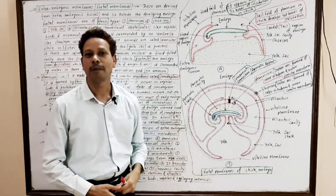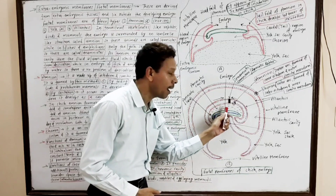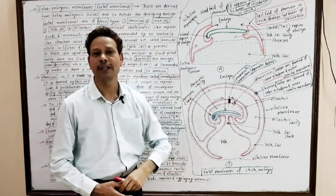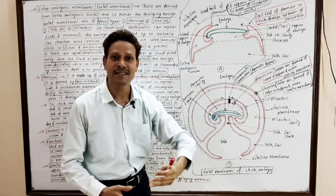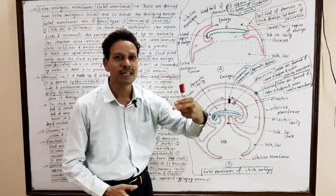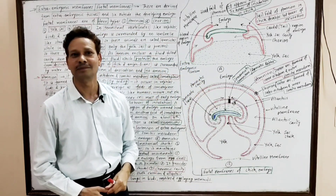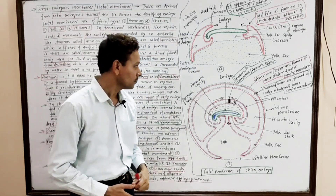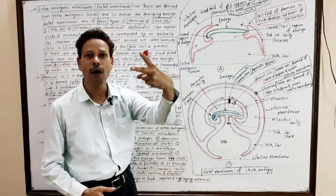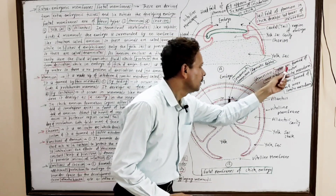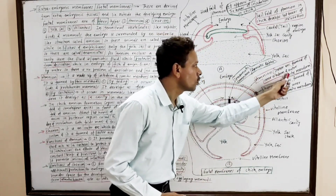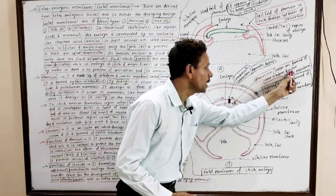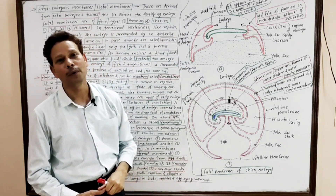The amniotic cavity is filled with amniotic fluid, which performs several functions. First, it prevents desiccation of the embryo in terrestrial forms. It also maintains the internal environment — meaning it maintains constant temperature and pressure around the embryo. Additionally, the amniotic fluid allows movements of the embryo. The amnion is formed by two layers: the outer somatic mesoderm and the inner ectoderm, collectively called the somatopleure.